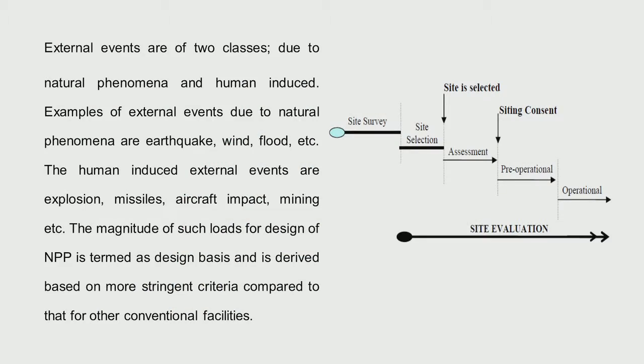We need to determine all these factors before we select a site — that is what the site survey does. We do all the surveys and assess whether the site is good enough. Then in site evaluation, after the survey is done, you select and assess the site, go to the regulatory authorities with the data, and get the consent for siting.